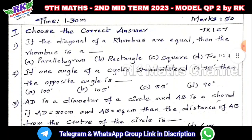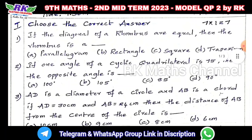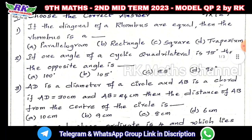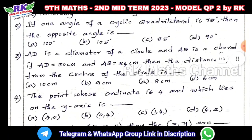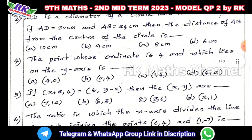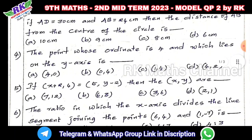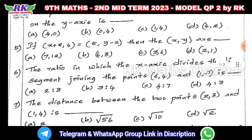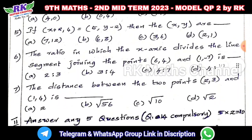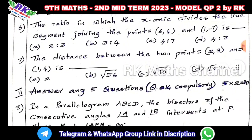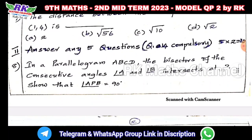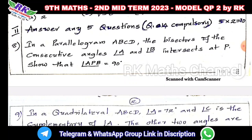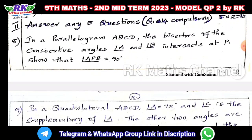So, first there are 7 one-mark questions. This one-mark section is from the book back. So you can practice for the exam. That is a model question paper, with 7 one-mark questions. You can practice for the exam.